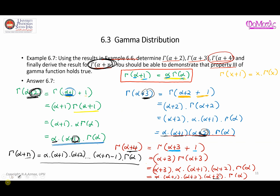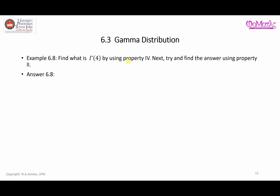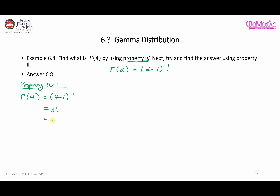Now let's look at the last example, related to property four. Property four states that gamma of alpha equals alpha minus one factorial. So by using property four, gamma of four equals four minus one factorial, which is three factorial, and three times two times one equals six.